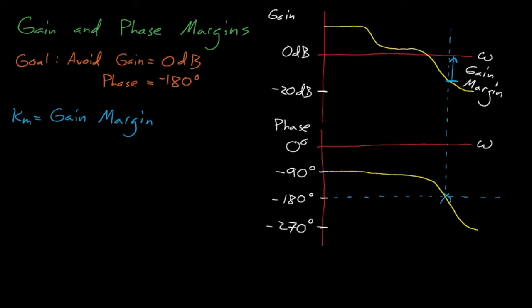If our gain margin happens to be less than 1, then this generally implies that our system is unstable. Every system will need to shut down eventually, and a gain margin that is less than 1 implies that our system will become unstable during shutdown as its power decreases.